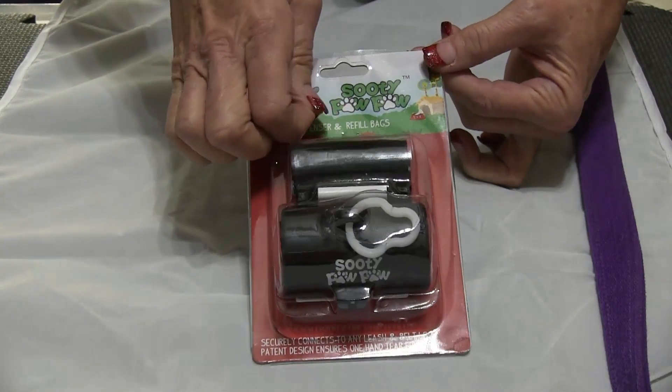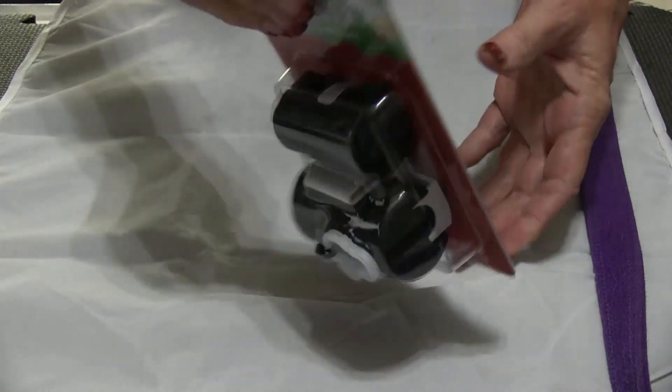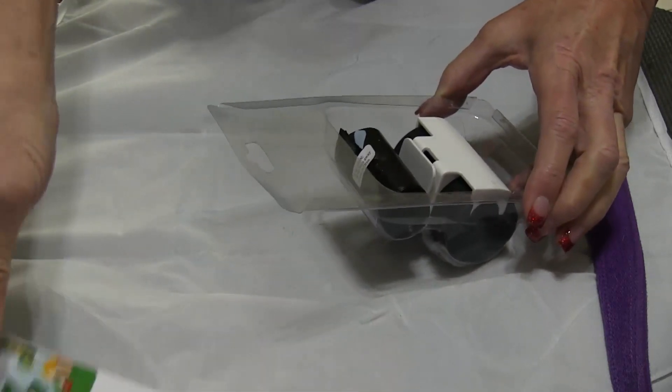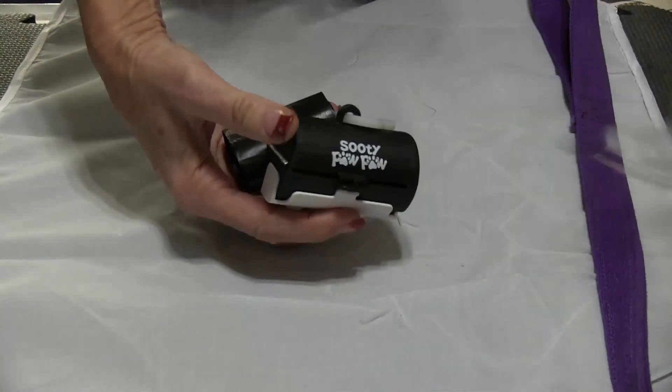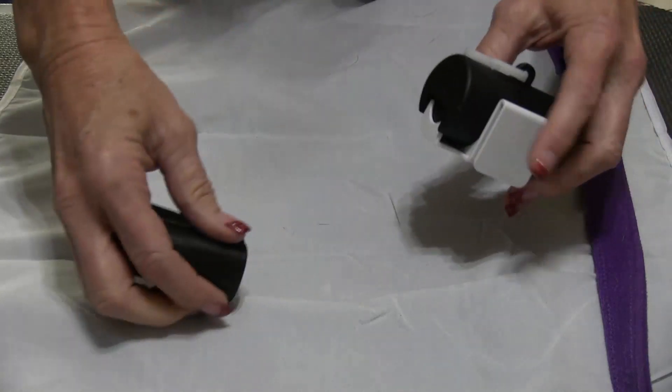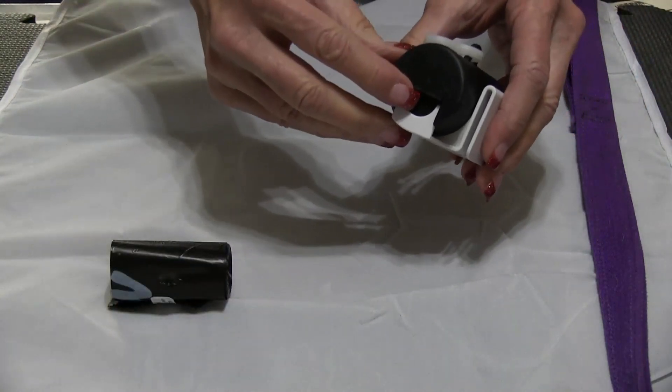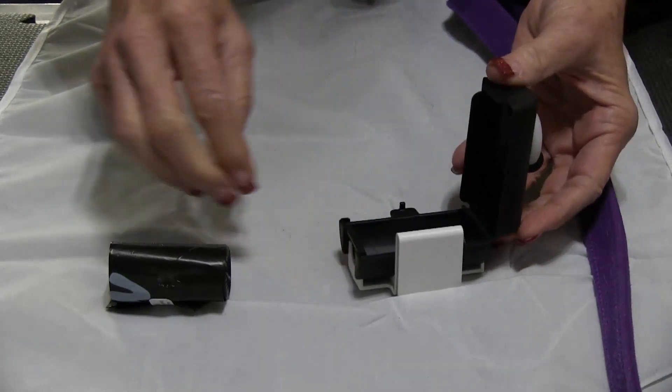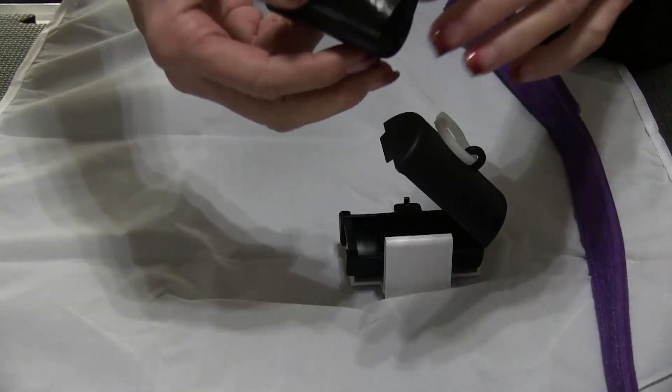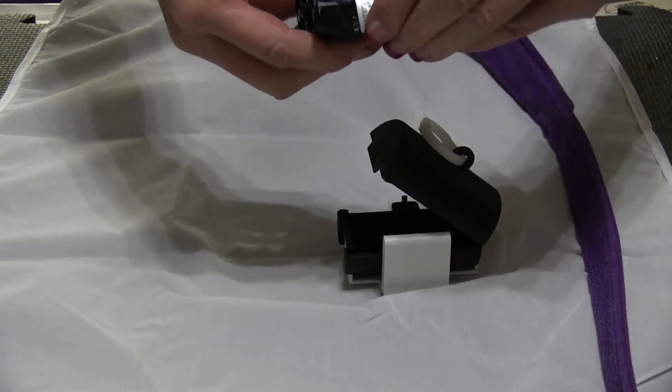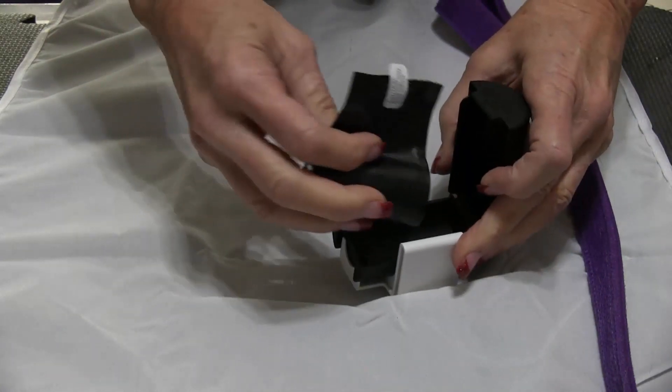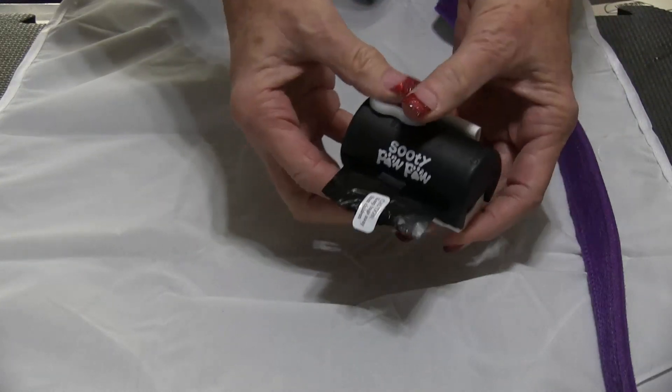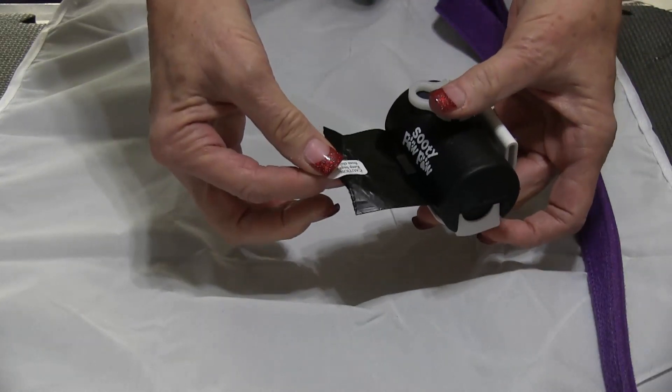First remove the staple, pull the cardboard out from the top, side with the arrow, pop it open, open your bags, close the lid, and you're set to go.